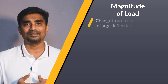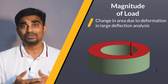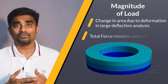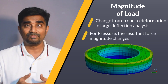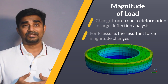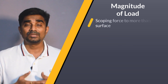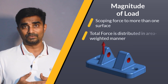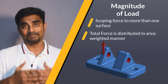Similarly, consider a large deflection analysis. If the size of the area on which a force is applied changes due to deformation, the total force remains constant. However, for pressure loads, if the area deforms and expands, this causes the resultant force magnitude to change. We also need to be careful when scoping the force to more than one surface — in this case, we always specify the total force, which is distributed in an area-weighted manner on multiple surfaces.